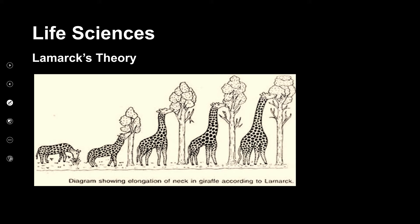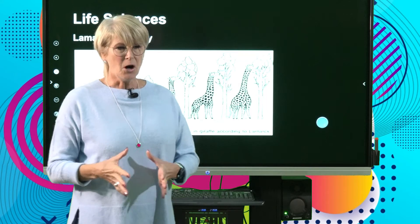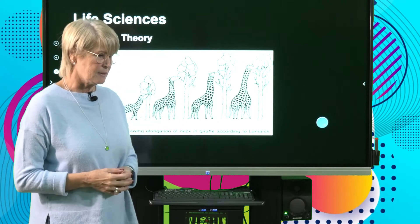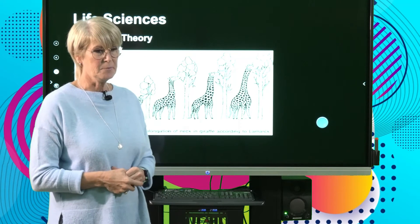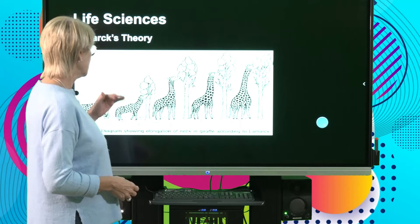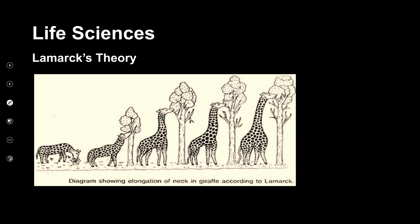Lamarck worked in the 18th century, and he believed that all organisms were born exactly the same — they all looked the same and had the same characteristics. For example, taking the giraffe, he believed all giraffes were born with short necks and initially ate off the ground.